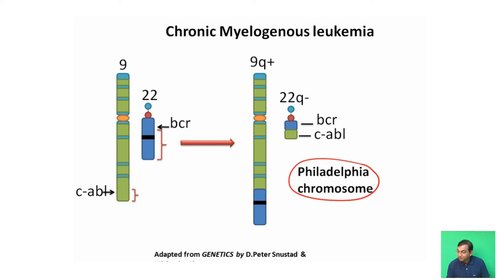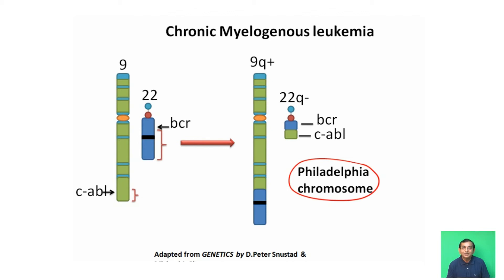In the Philadelphia chromosome, two genes are fused: the BCR gene, present on chromosome 22 (BCR stands for breakpoint cluster region), and the ABL gene, present at the tip of chromosome 9 (ABL stands for Abelson murine leukemia). When both genes are fused, the ABL gene, which synthesizes tyrosine kinase, produces it in excess. As a result, excessive proliferation of white blood cells occurs and chronic myelogenous leukemia develops.